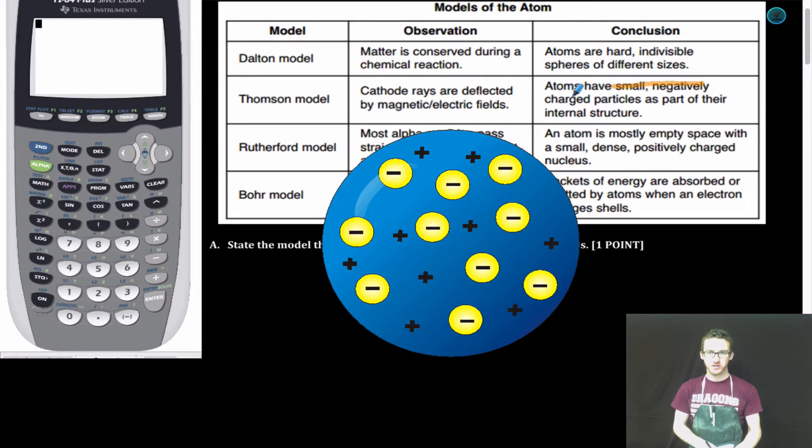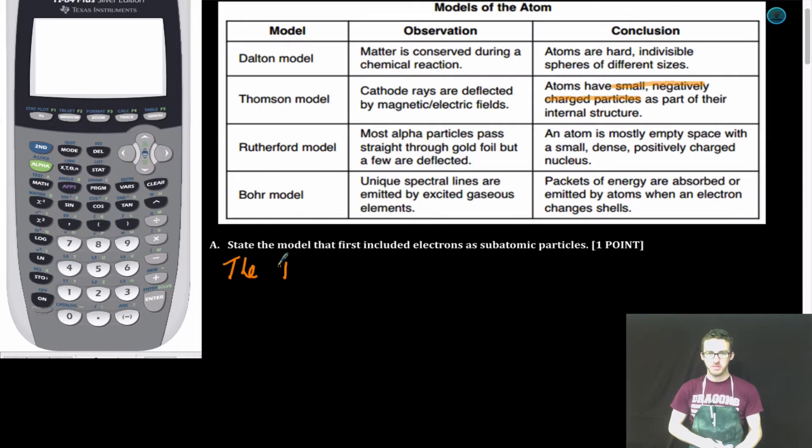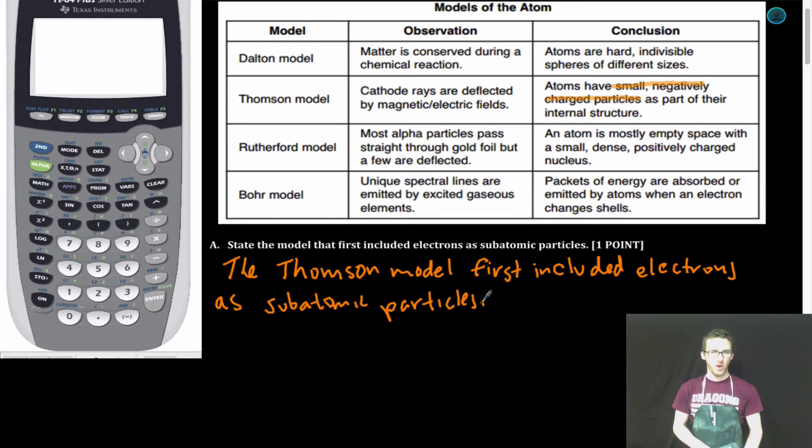negatively charged particles, also known as electrons. The Thompson model first included electrons as subatomic particles. One point.